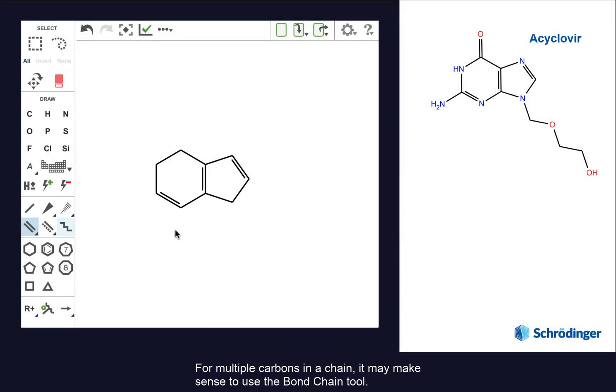For multiple carbons in a chain, it may make sense to use the bond chain tool. With 5 bonds here, drag until you see a 5 and then release the mouse.